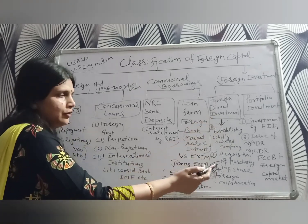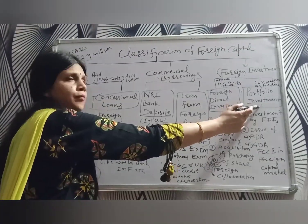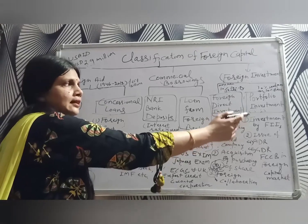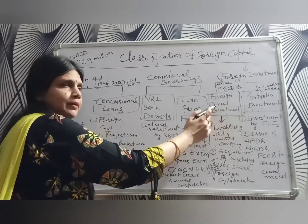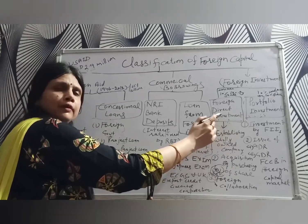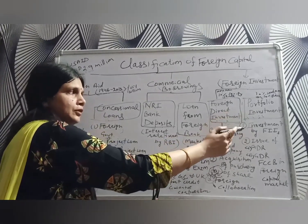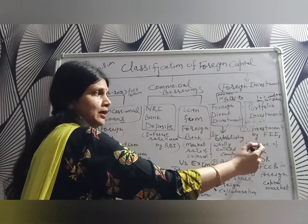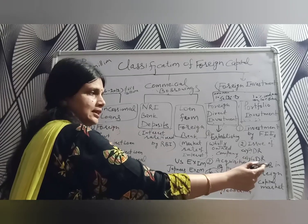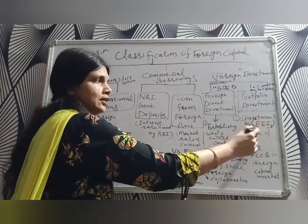So these are the three forms in which foreign direct investment comes into India. Foreign investment also comes in the form of portfolio investment, where foreign investors invest in shares, debentures, and bonds of Indian companies. The difference between FDI and portfolio investment is that in FDI the foreign company's share is more than 10%, whereas in portfolio investment it is less than 10%. Portfolio investment comes in forms such as foreign institutional investment, and the issue of ADR, GDR, and FCCB in foreign capital markets.